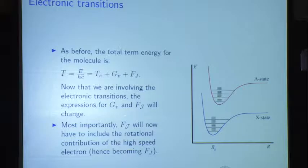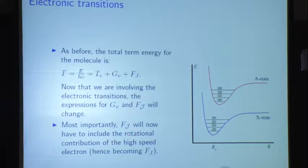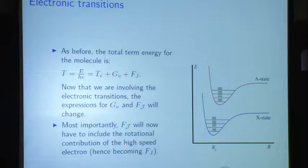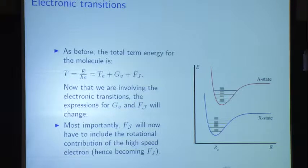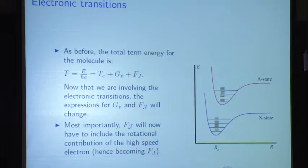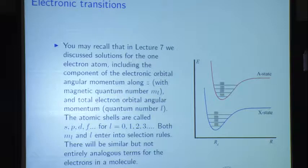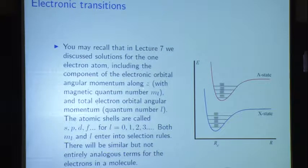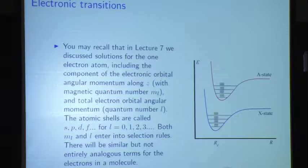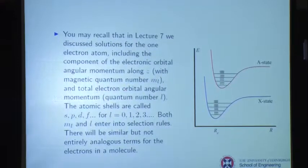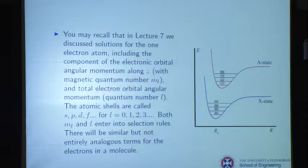Most importantly, the rotational energy F is now going to have to include the rotational contribution of the high-speed electron — the orbital angular momentum of the high-speed electrons — turning it into a total rotational energy level F with a different J. We talked about solutions to the one-electron atom: electronic orbital angular momentum along Z had magnetic quantum number M sub L and a total electronic orbital angular momentum quantum number L. The atomic shells were called SPDF for L equals 0, 1, 2, 3.